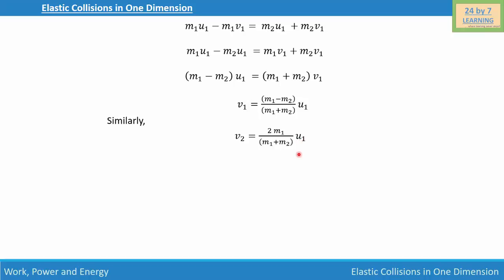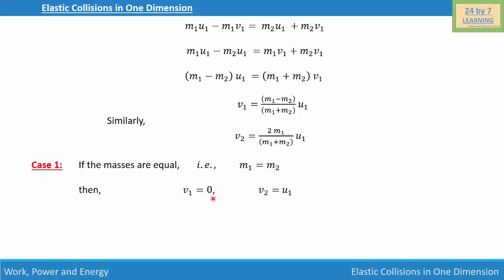Now we have two cases based on the mass of the bodies. Case 1: if the masses are equal, meaning m1 = m2, then substituting into our formulas gives v1 = 0 and v2 = u1.